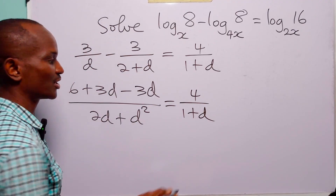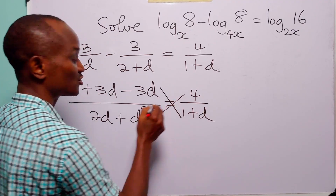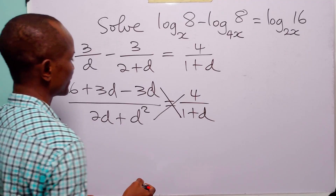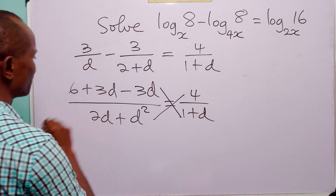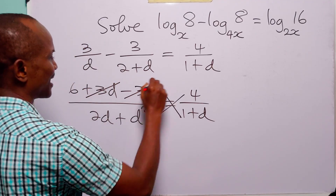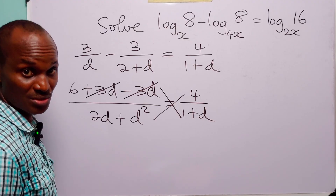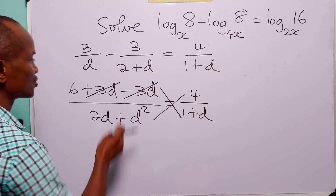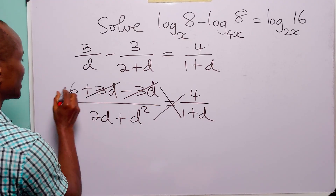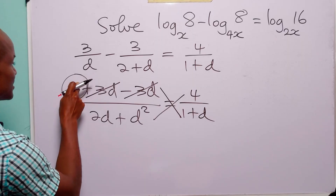Notice that 3d minus 3d equals 0, so the numerator simplifies to just 6. We then cross multiply: 6 times (1 + d) gives 6 + 6d on the left, and 4 times (2d + d²) gives 8d + 4d² on the right.